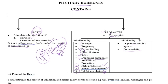Somatostatin is the master of inhibition and makes many hormones static — that is why its name is somatostatin. It inhibits growth hormone, prolactin, insulin, glucagon, and more — it inhibits all the hormones. With this we come to the end of the first lecture. Thank you so much.